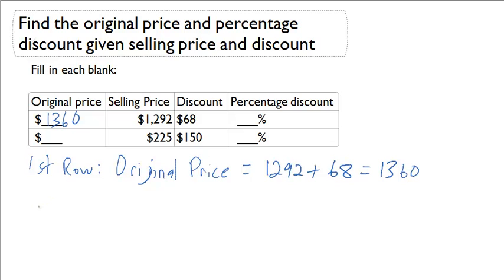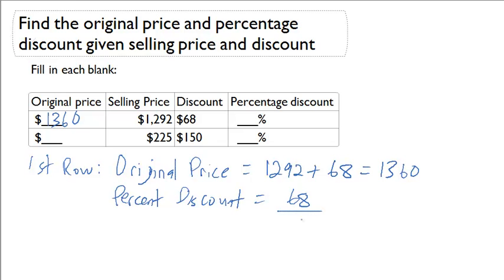Now let's try to find the discount percentage. The percent discount has to equal the discount amount of $0.68 divided by our $13.60, and that's going to give us 5%.